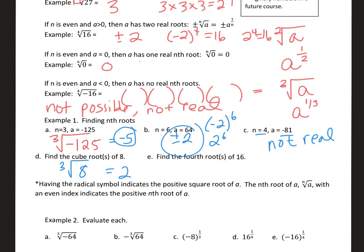Find the fourth roots of 16. This is the fourth root — it's even — so there are going to be two answers: plus or minus 2, because 2 to the 4th is 16 and negative 2 to the 4th is 16. Having the radical symbol indicates the positive square root of a. The nth root of a with an even index indicates just take the positive. So from now on, if I have to take the 6th root of 64, you only want the positive one, so it's positive 2.